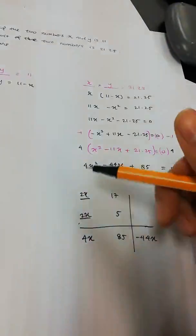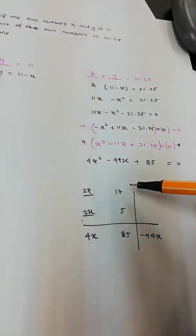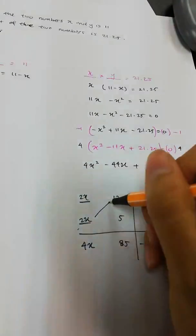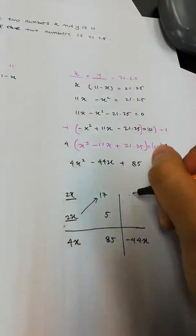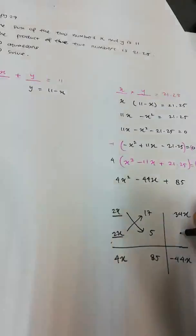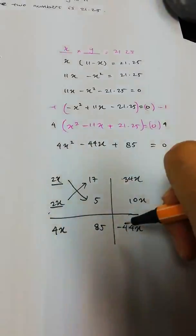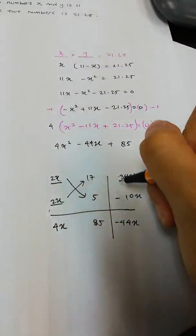Okay, so let's continue. So it's 2x and 2x, 17 and 5. So let's cross multiply. We're going to get 34x and this one will be 10x, but we need to get negative here. So both should be negative.